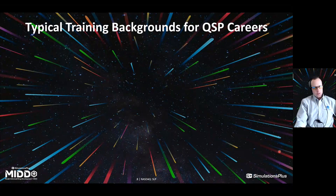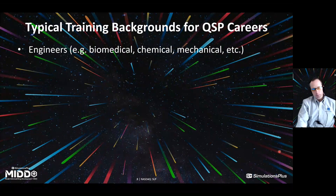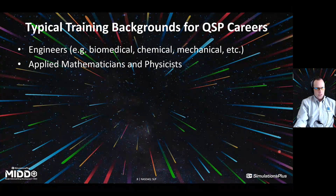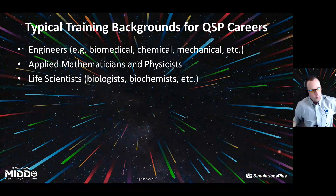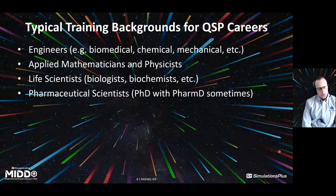How do you get into the field? Let's discuss some typical training backgrounds for careers in QSP. Engineering — a lot of QSP modelers come from biomedical, chemical, mechanical, or even electrical engineering backgrounds, which allows for that focus on application and math. Applied mathematicians and physicists are also very common as QSP modelers and bring a strong math background. Life scientists come in with emphasis on biology, biochemistry, and pathophysiology, and often work on catching up on the mathematics over time. Last but not least, pharmaceutical scientists with a wide variety of areas of emphasis also come into QSP.